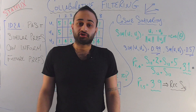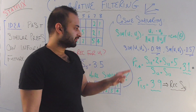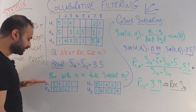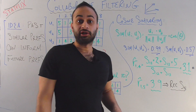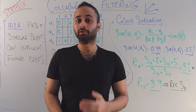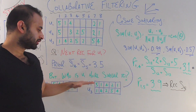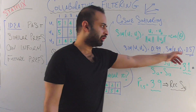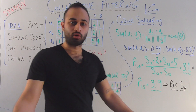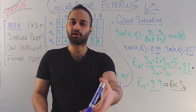I won't go through the full calculation, but the cosine similarity between U1 and U2 — comparing those two vectors — comes out to 0.99, almost as high as it could be. On the other hand, the cosine similarity between U1 and U3 is 0.57, which is much lower. This matches our intuitive understanding from before.